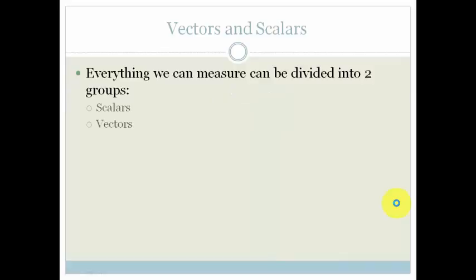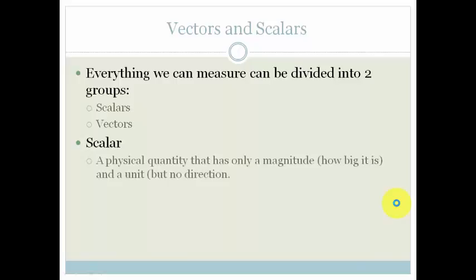So, everything we measure can be divided into two groups, either scalars or vectors. Your scalar is a physical quantity that has magnitude only. In other words, it just tells how big it is, but there's no direction. So, it only tells like 10 kilometers, 3 kilometers, whatever. There's no up or down, sideways, left or right.